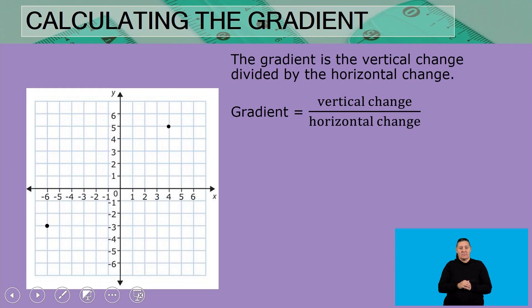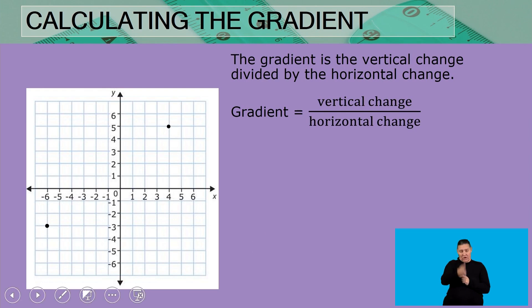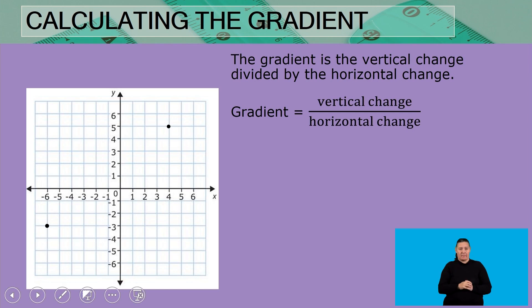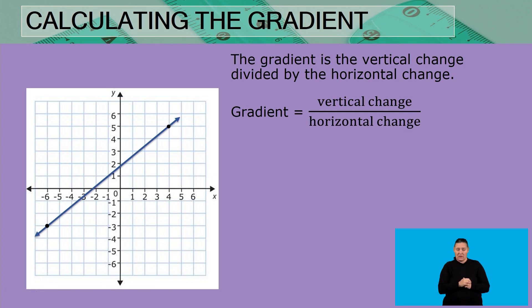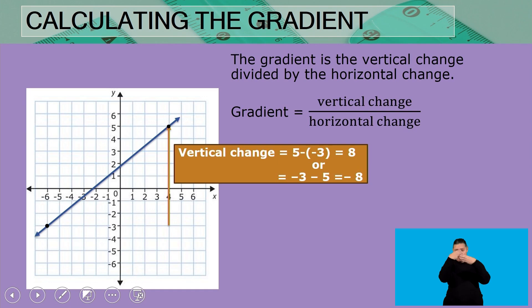Let's look at the next concept in our concept map: calculating the gradient. The gradient is the vertical change divided by the horizontal change. When looking at the line given, we focus on the vertical change using two points on the line.